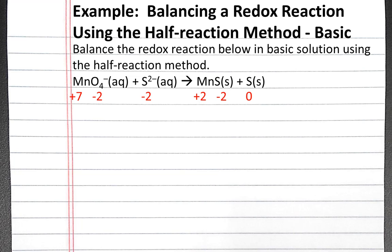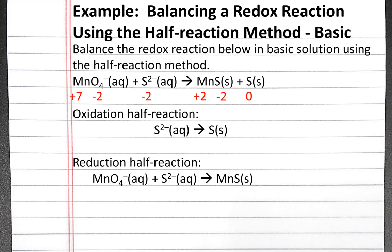For the oxidation half-reaction, we want to identify the species whose oxidation state increases. Sulfur goes from minus 2 to 0, so it's in the oxidation half-reaction. For the reduction half-reaction, manganese oxidation state goes from plus 7 to plus 2. We also have to include the sulfide anion in this half-reaction because on the right we have manganese sulfide.